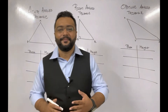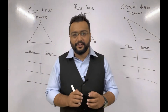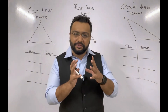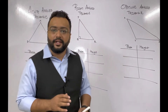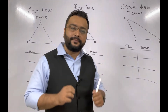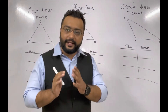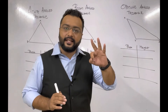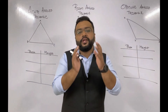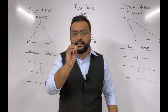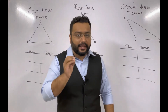Hello everyone, welcome back to my channel. Today in this video we are going to study a very basic thing. We all know there are total six types of triangles — three triangles are based on sides and three are based on angles. Today we are going to learn and study triangles based on angles.